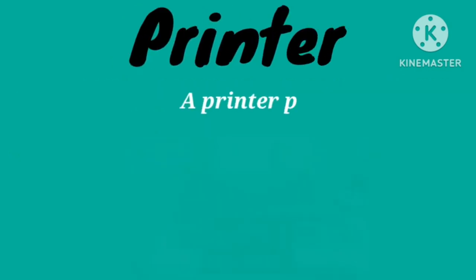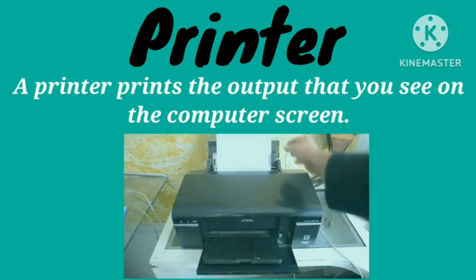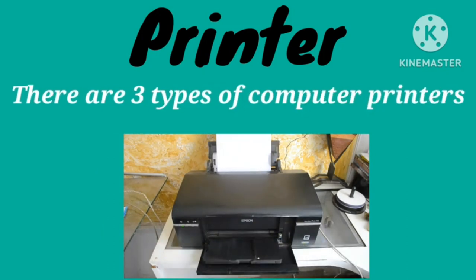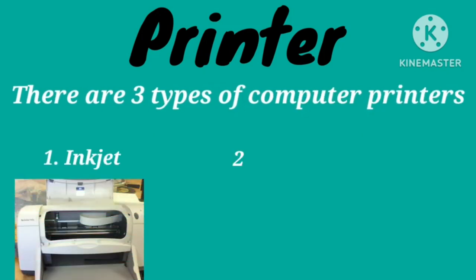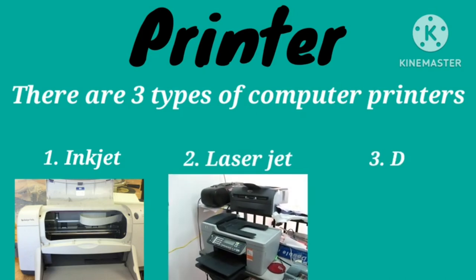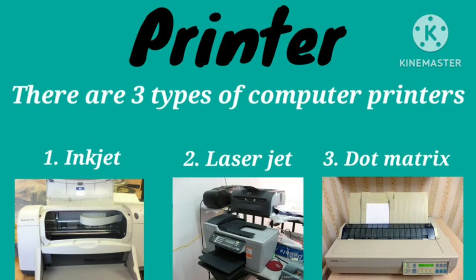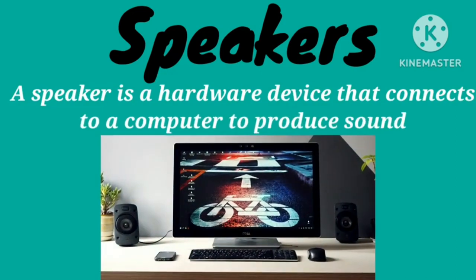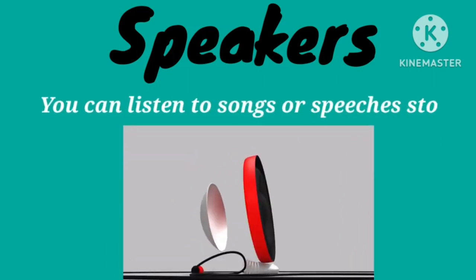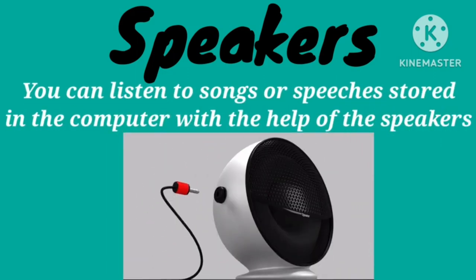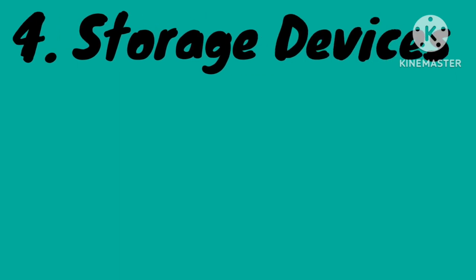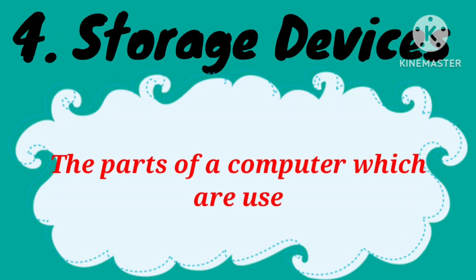Printer: a printer prints the output that you see on the computer screen. There are three types of computer printers: number one, inkjet; number two, laser jet; and number three, dot matrix. Speakers: a speaker is a hardware device that connects to a computer to produce sound. You can listen to songs or speeches stored in a computer with the help of speakers.